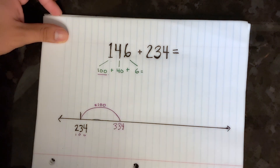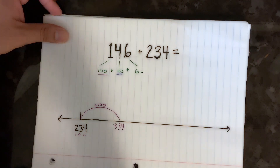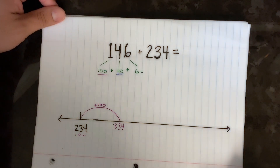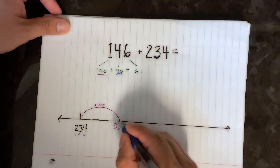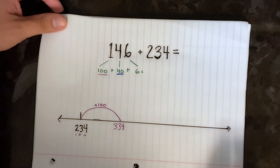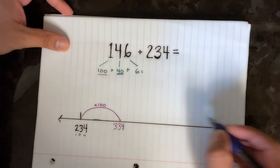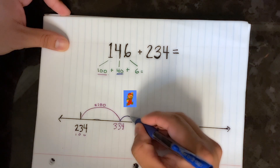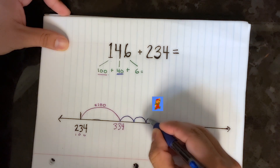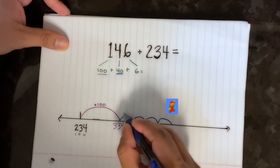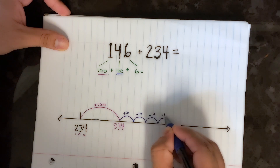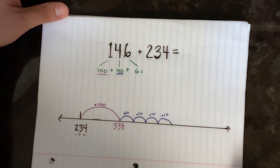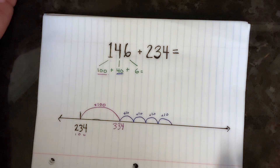Now we go to our tens column. We need to jump 40 more. I'm going to break it down and go by 10, so let's count by tens to 40: 10, 20, 30, 40 — and I'll put plus 10 on each of those jumps.